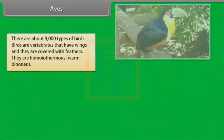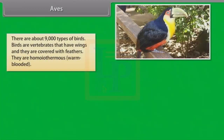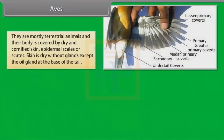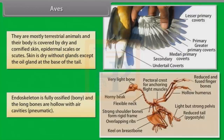There are about 9,000 types of birds. Birds are vertebrates that have wings and they are covered with feathers. They are homeothermous or warm-blooded. The bird's skeleton is very light in weight. This helps them to fly, except flightless birds such as Ostrich. Skin is dry without glands except the oil gland at the base of the tail. Endoskeleton is fully ossified, i.e., bony.